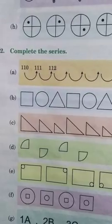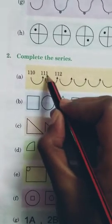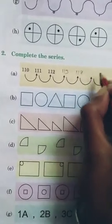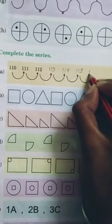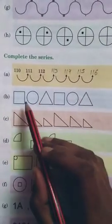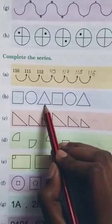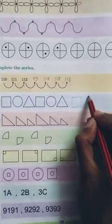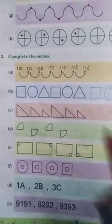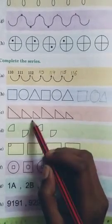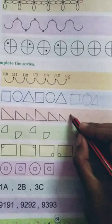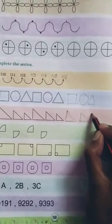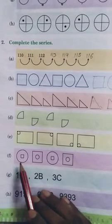Now question number 2. Complete the series. In A, here is 110, then 111, 112, then 113, 114, 115 and 116. Now see B. Then square, then circle, then triangle. Square, circle, triangle. Then make you also square, then circle, then triangle. Now see here the big triangle, then small, then small. You will make like this. First big, then small and then small. Children, like that you can do up to F.